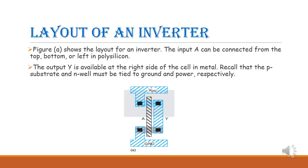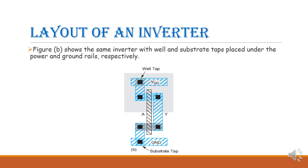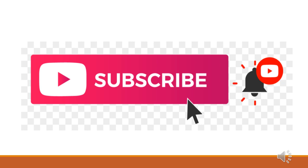Figure A shows the layout of an inverter. The input A can be connected from the top, bottom, or left via the polysilicon. The output Y is available at the right side of the cell in metal. The P-substrate and N-well should be tied to ground and power respectively. This is the layout of an inverter with well and substrate taps. I hope you have understood the basics of layout design rules and how to draw the layout of an inverter. Please subscribe to the channel and share with your friends. Thank you.